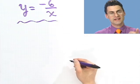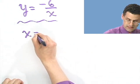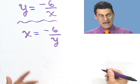I just flip the roles. I take every x, make it a y. Take every y, make it an x. So I'd see x equals minus 6 over y, and now solve for y. How would you solve for y here?